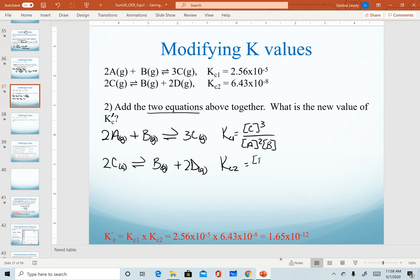For Kc2, we have B and D squared in the numerator. We have C squared in the denominator. Now, when I add my two equations together, remember from Hess's law, that when we have the same substance on either side of the arrows, we can cancel it. And when they're on opposite sides, we can cancel. And technically, what we're doing is subtracting coefficients. So notice I have three C's as a product in equation one. I have two C's as a reactant in equation two. And so I'm going to subtract those. That's going to leave me with one C on the product side.